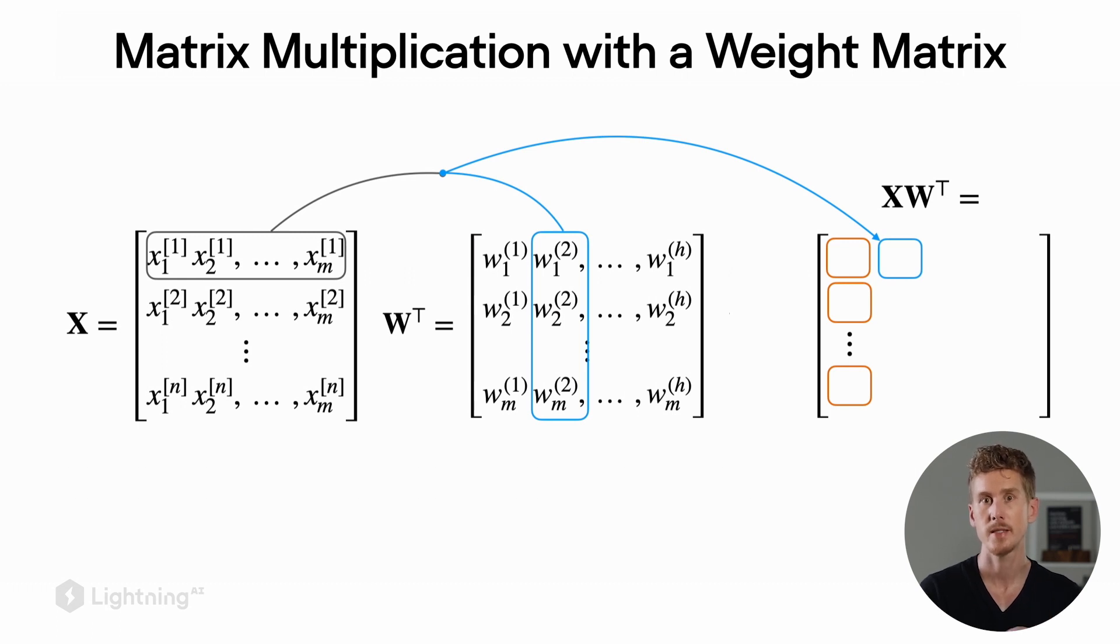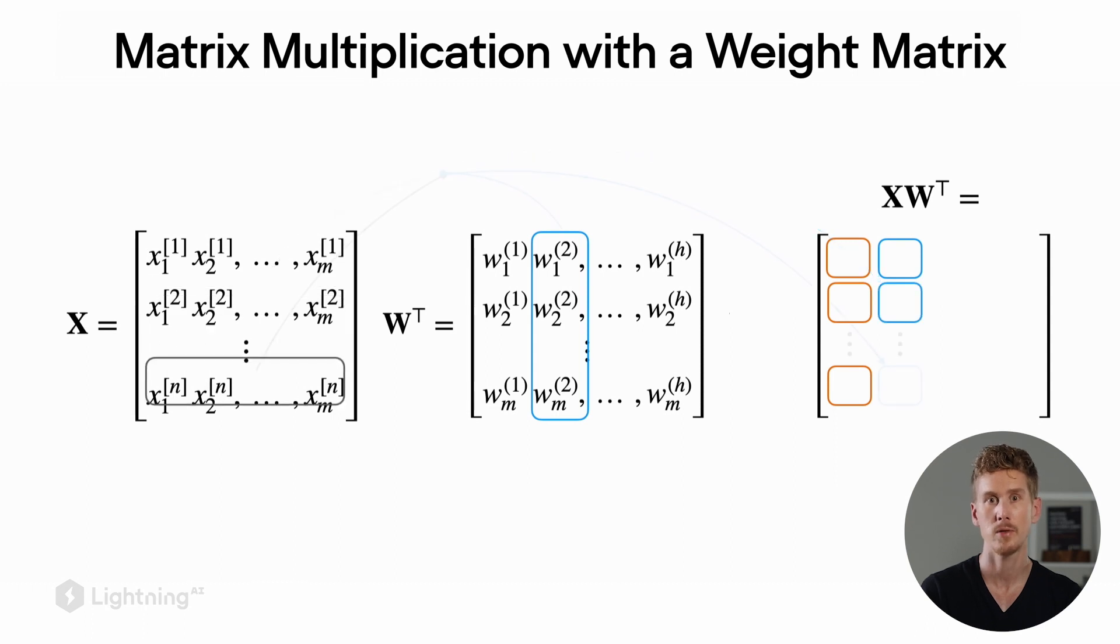After we completed that, we can tackle the second column of the output matrix. It's the same concept. We compute the dot product between each row in the input matrix and the second column in the weight matrix, which becomes our weight vector. We do that until we have covered each single row in the input matrix and computed the dot product with the second column of the weight matrix.